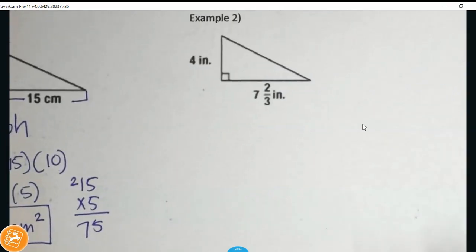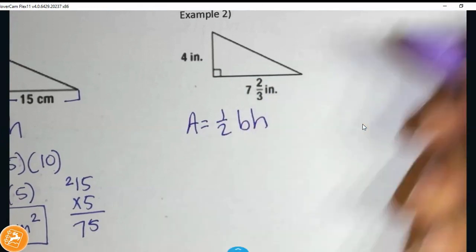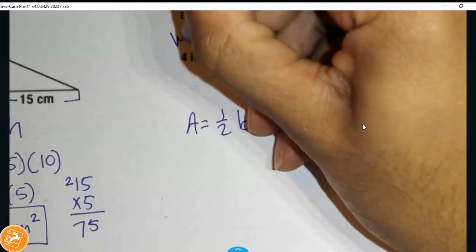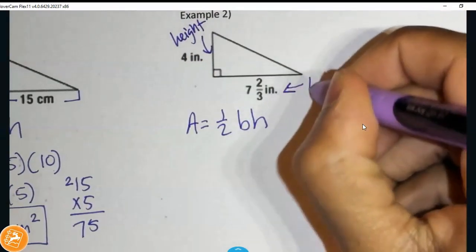Now we have a fraction, okay? Not a big deal, guys. We know how to handle that. Area is equal to one half base times height. Over here, we have the height of our rectangle. And here, we have the base.